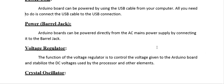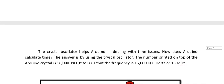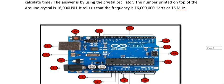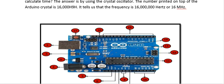Second: Power Barrel Jack. The Arduino board can be powered directly from the AC main supply by connecting it to the barrel jack. You can also power your board by simply connecting an AC supply directly to the power jack.